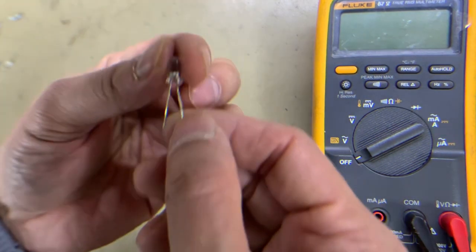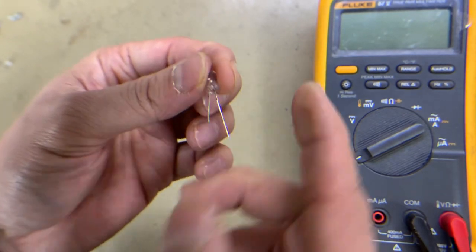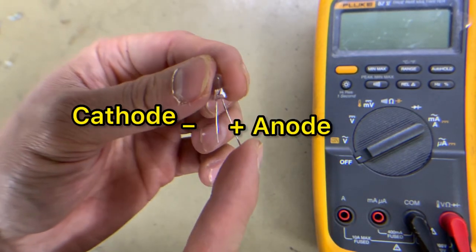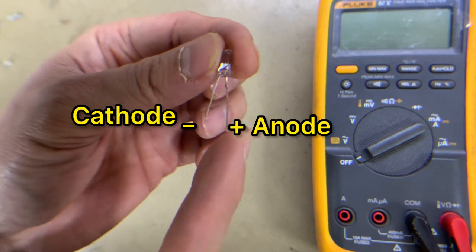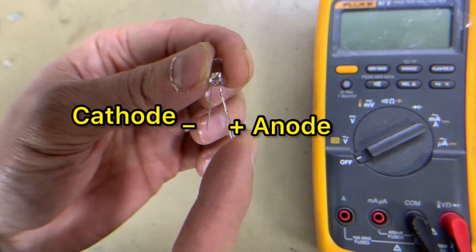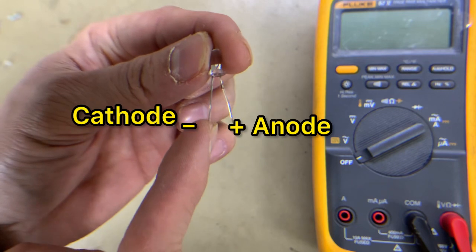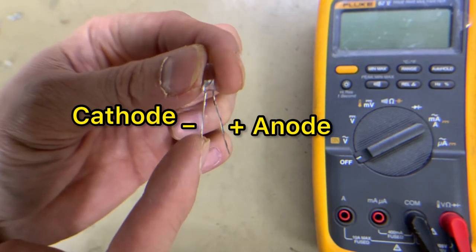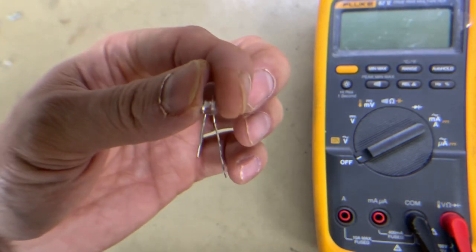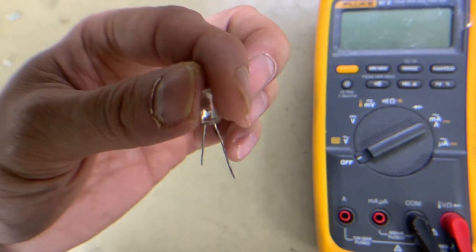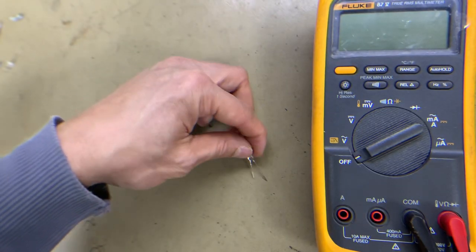We have here a sample of a light-emitting diode. The right terminal is longer—this is the anode. The left side, the shorter terminal, is the cathode. This is a crystal clear light-emitting diode. Let's start the test.